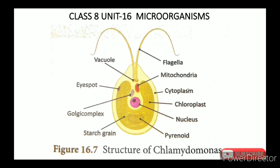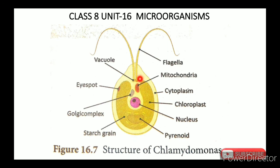To recap the Chlamydomonas structure: it has a cell membrane and a cup-shaped chloroplast containing the nucleus. The anterior end is narrow and the posterior end is broad. The anterior part bears two flagella — flagella is the plural term. The contractile vacuoles are located near the flagella.